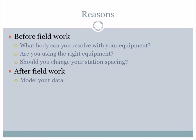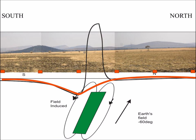You use forward modeling before fieldwork to determine what body you can actually resolve with your equipment. Maybe a dike at 100 meters depth that's very narrow — there's no way you're going to see it. It helps you know the smallest body you can pick up in the field, whether you're using the right equipment, and whether your station spacing is adequate. If you keep your spacing at 10 meters, you might miss something and get a wrong image — that weird small aliased anomaly instead of the full anomaly.